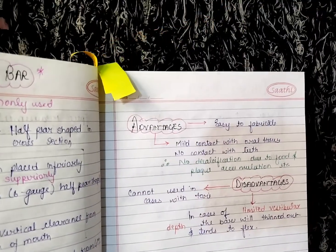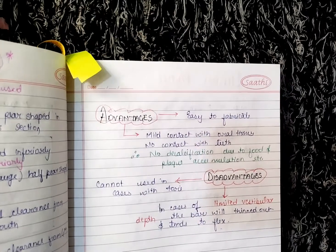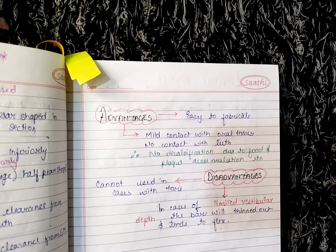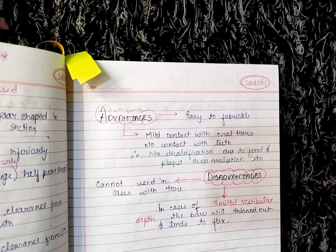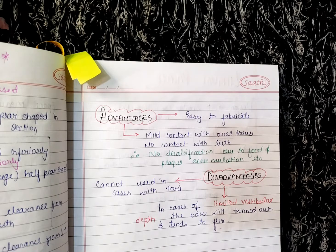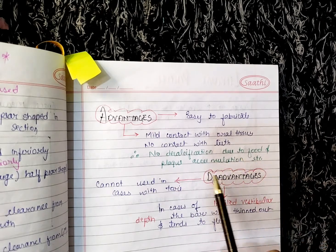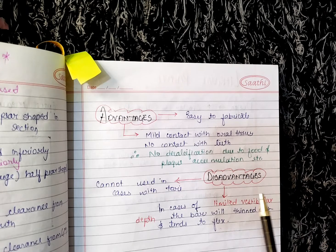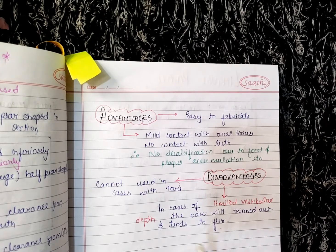Placing it inferiorly ensures sufficient space and no restriction of tongue movement. The advantages are: it is easy to fabricate, has mild contact with oral tissue, and no contact with teeth — which is why there is no decalcification due to food plaque accumulation.